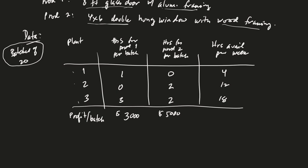So the numbers that you see here correspond to batches of 20 products each. Let's take a look at the data. Here on the side is plant one, two, and three, and here we have hours for product one per batch and in the other column, we have hours for product two per batch. And then we have hours available per week. Product one is the aluminum frame glass door, so this is going to take one hour in plant one and three hours in plant three. At the bottom here is the profit for that batch, so we'll get $3,000 worth of profit for that. Here we have hours for product two per batch. That's going to take plant two and plant three, two hours each. Overall, that's going to give us a $5,000 profit. We're told that we have four hours available in plant one, twelve hours available in plant two, and eighteen hours available in plant three.